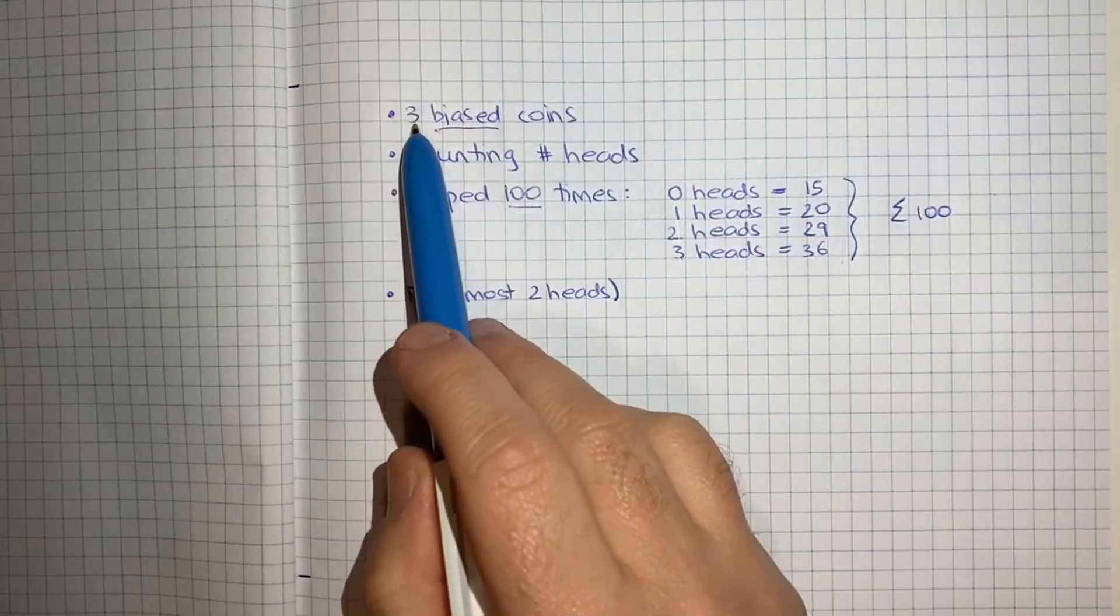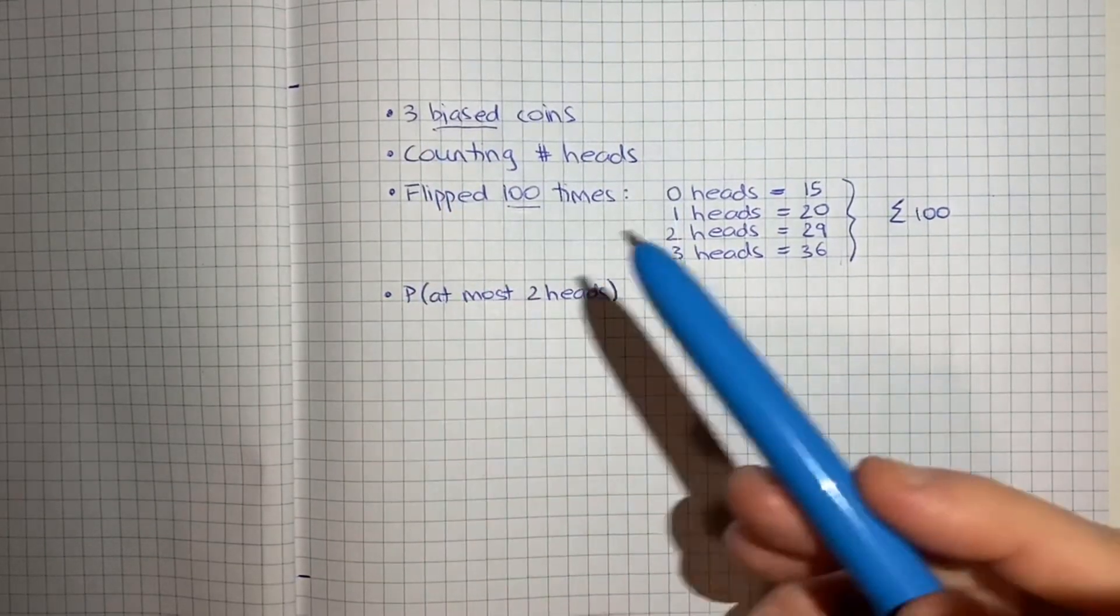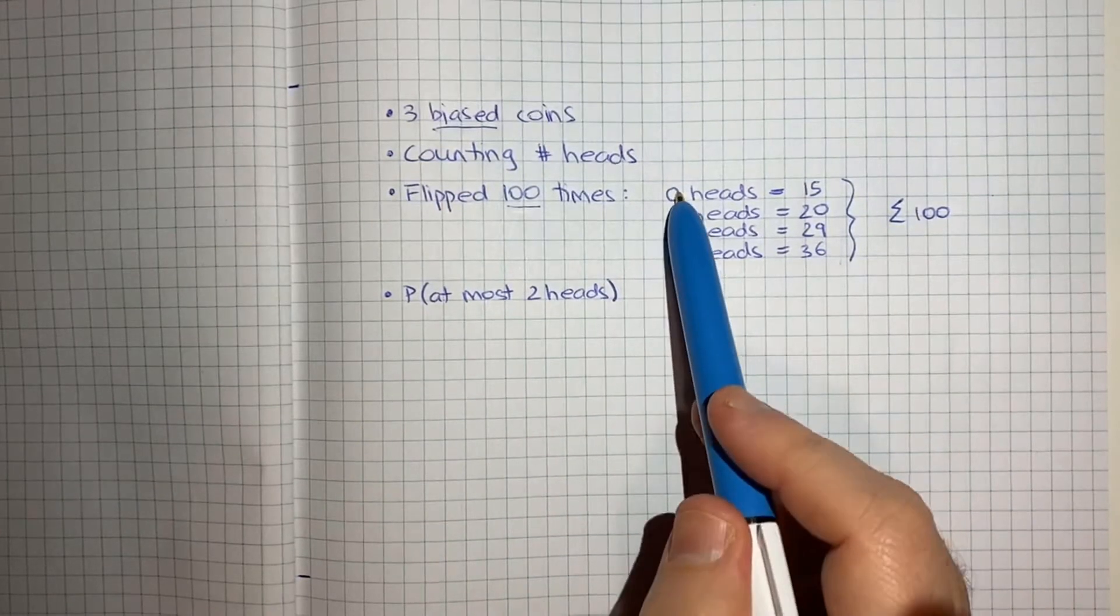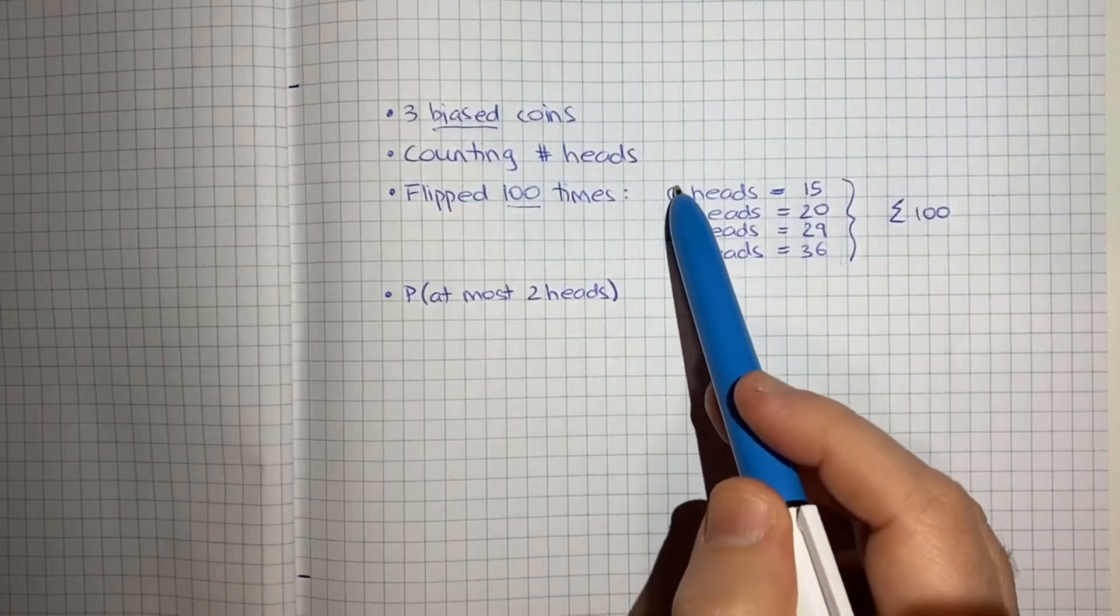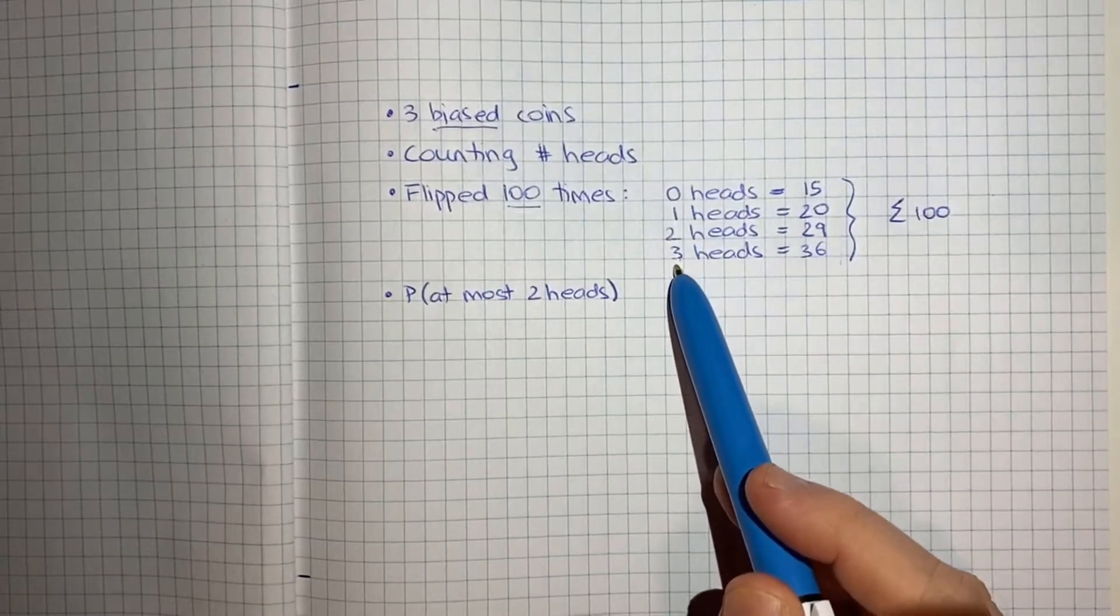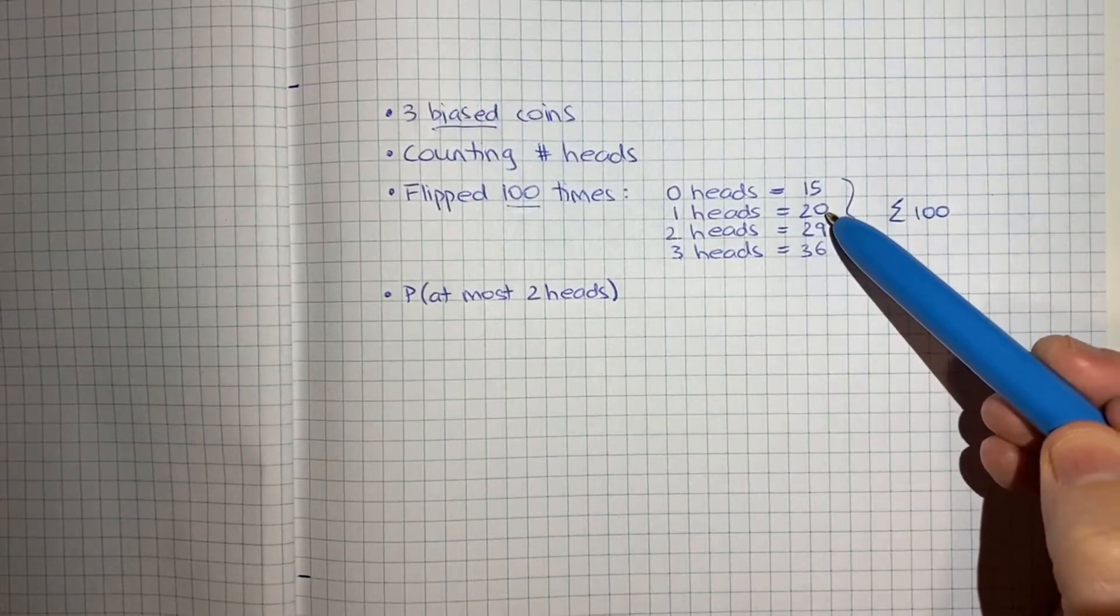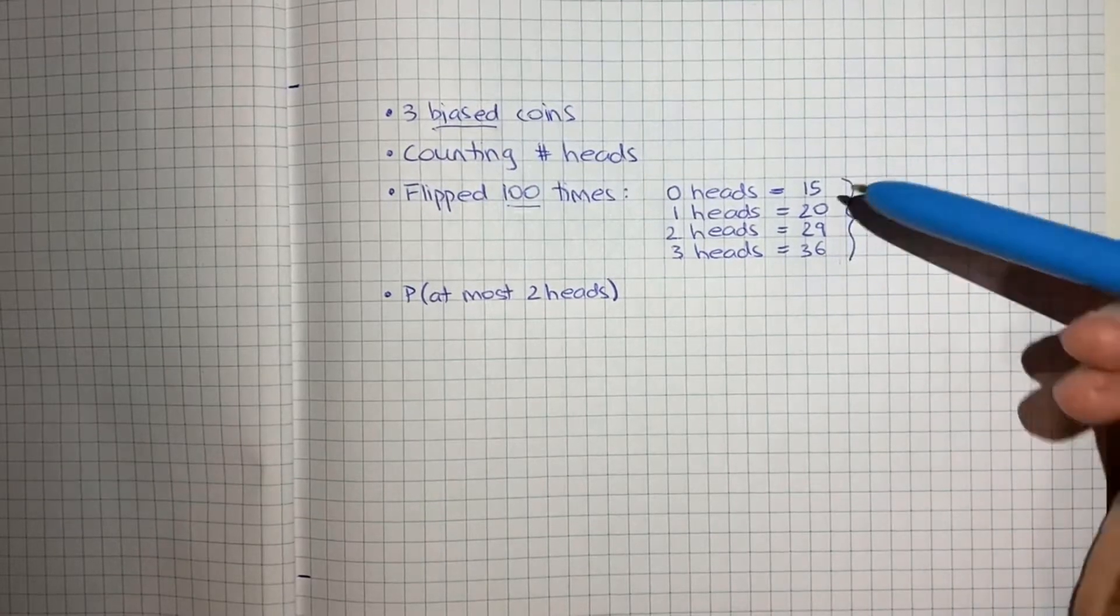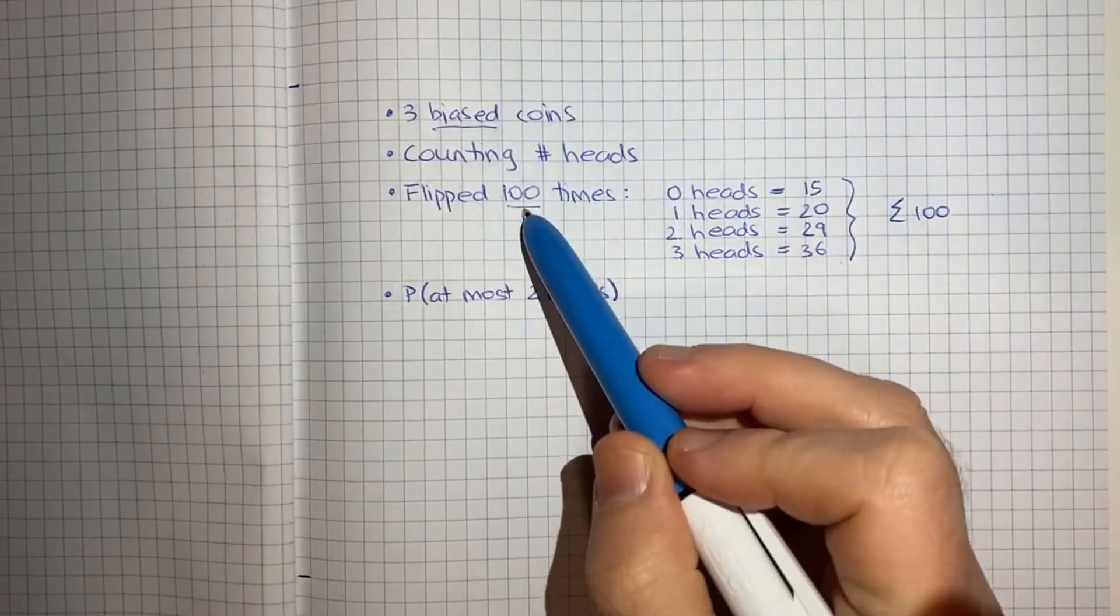So obviously if you've got three coins that you're flipping in any one iteration, you can either get no heads, you could get one head, two heads, or three heads. They're the total possible outcomes. And what we see here is we got no heads 15 times, 1 head 20 times, 2 heads 29 times, and 3 heads 36 times, and those four numbers add up to the hundred times that we flipped.